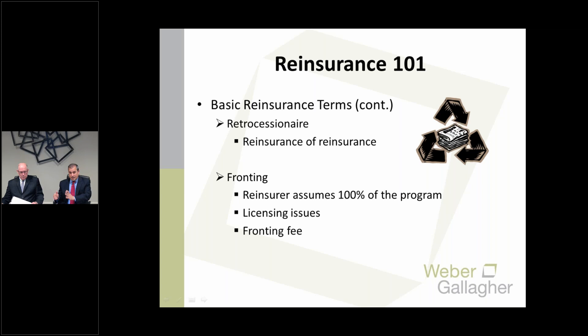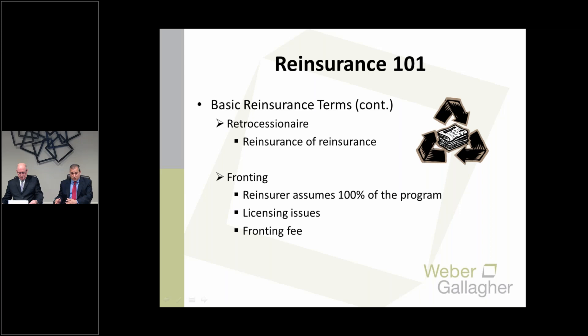There's also something called a fronting arrangement. This typically involves a situation where an insurance company wants to write coverage in a jurisdiction where it's not authorized, or wants to leverage another entity's customers. In that situation the reinsurer assumes 100% of the program including the licensing issues, and pays a fee to the insurance company whose paper the reinsurer is using. That's somewhat different from the normal relationship, which involves not a complete ceding of the risk to the reinsurer.